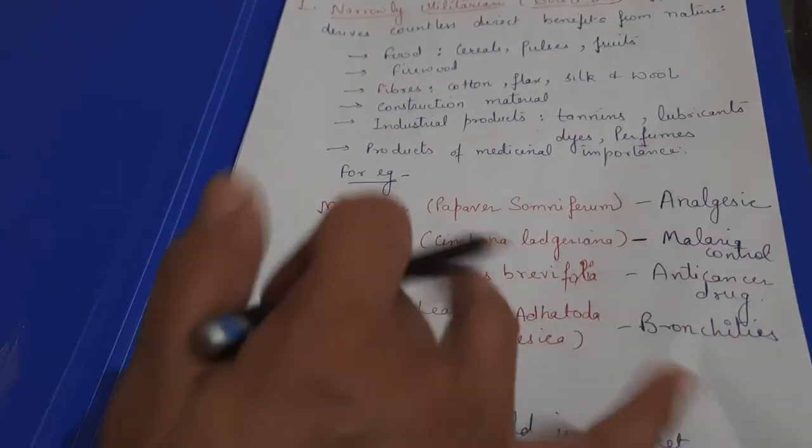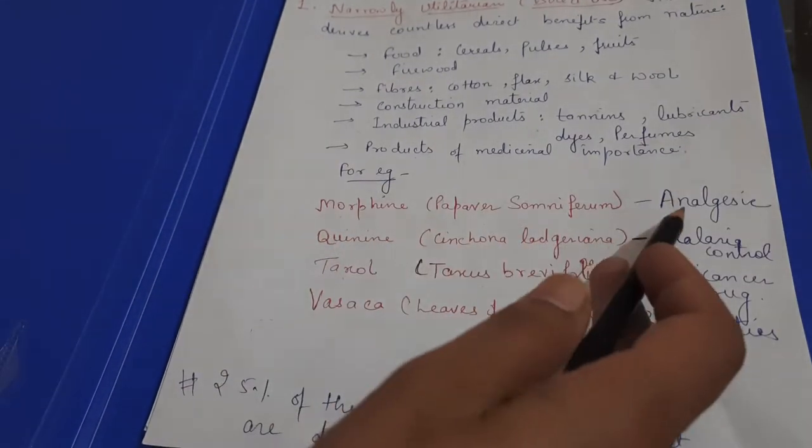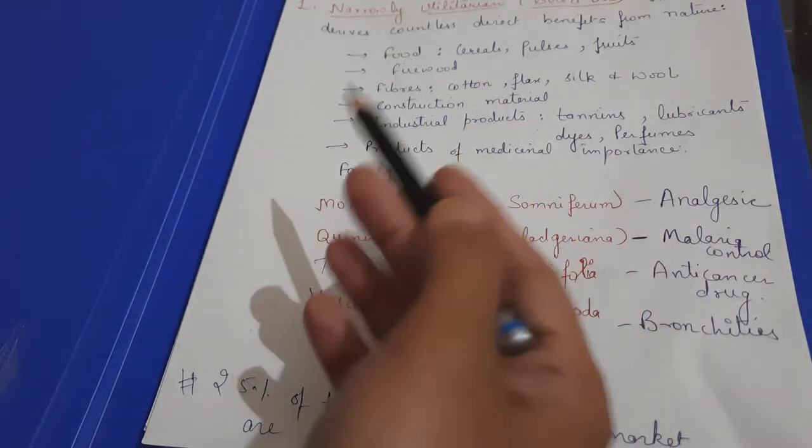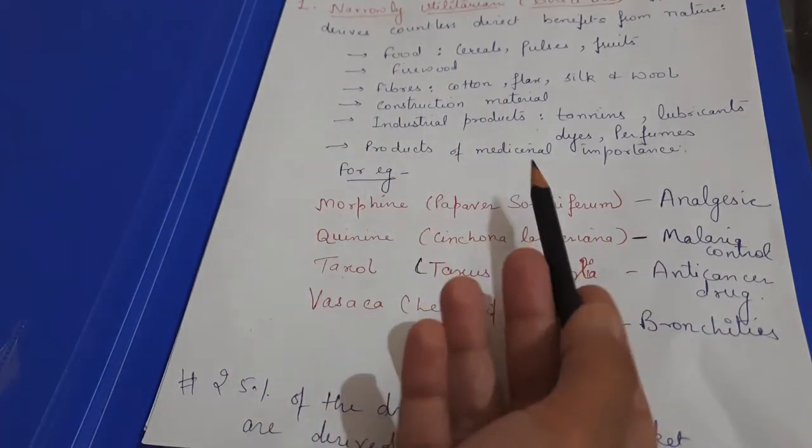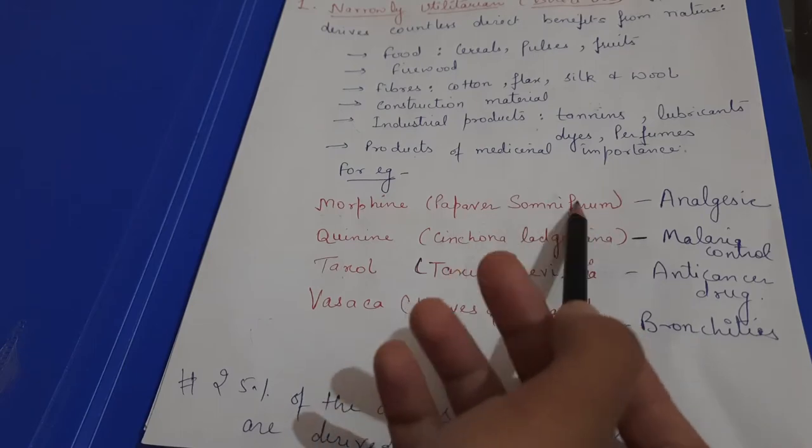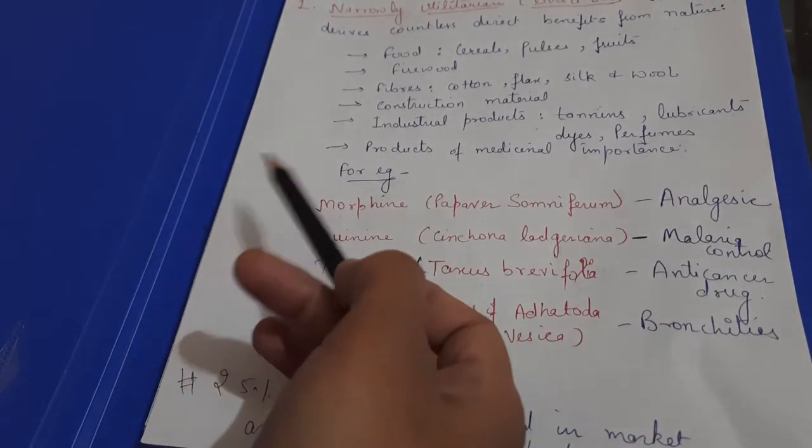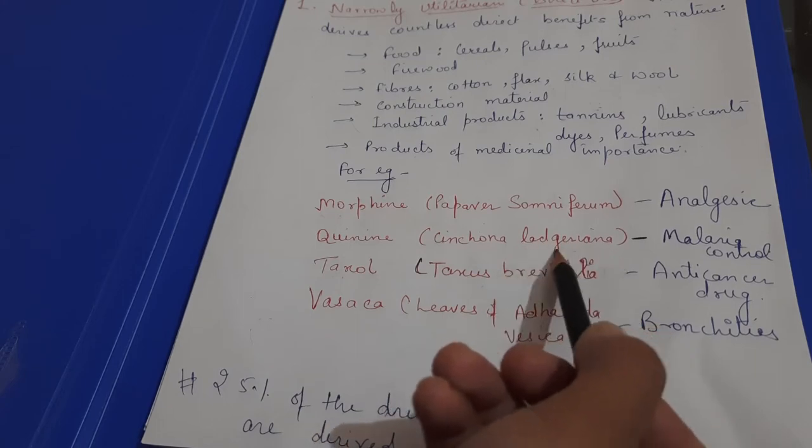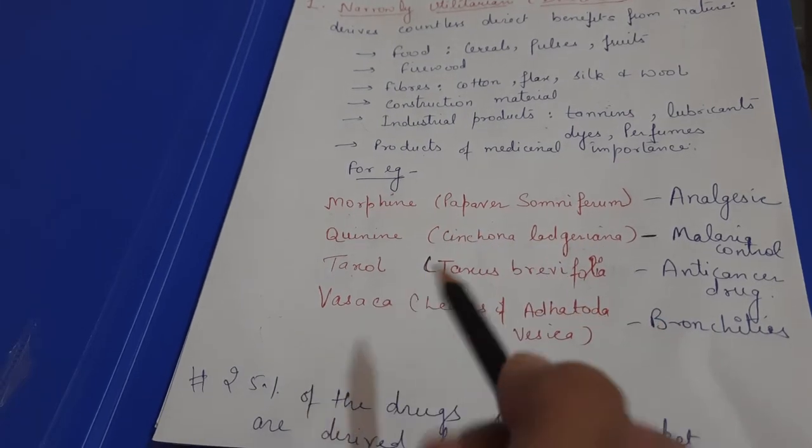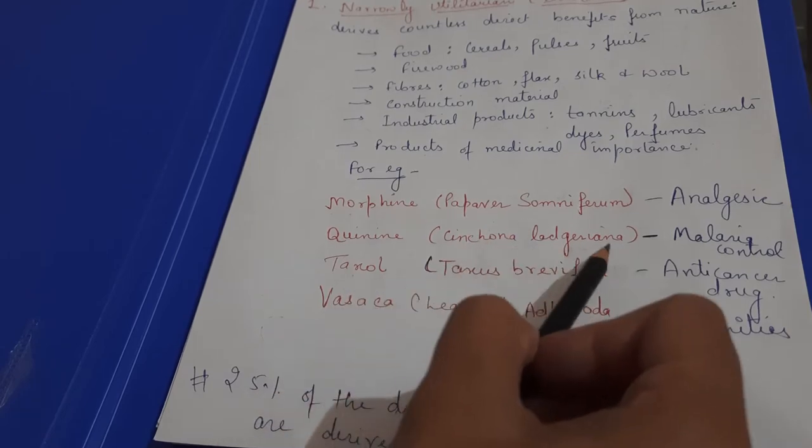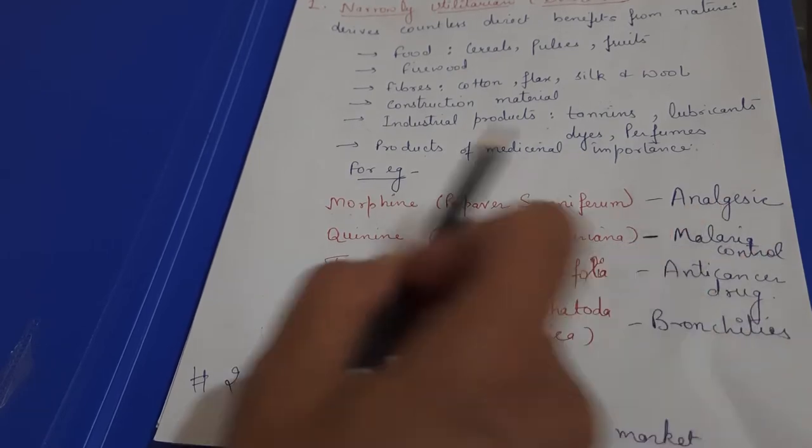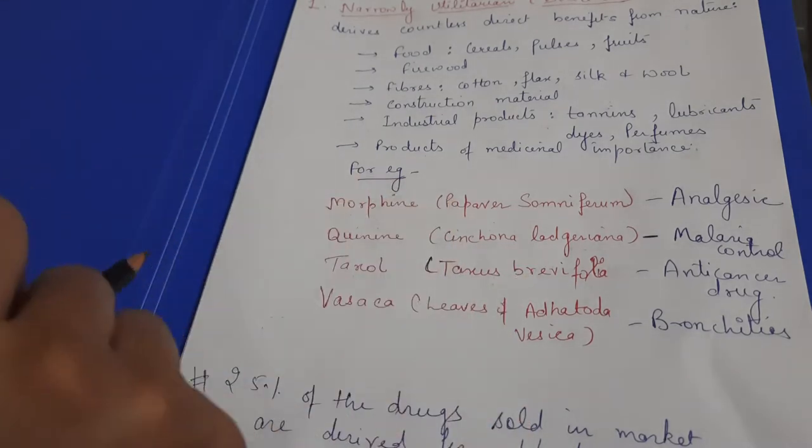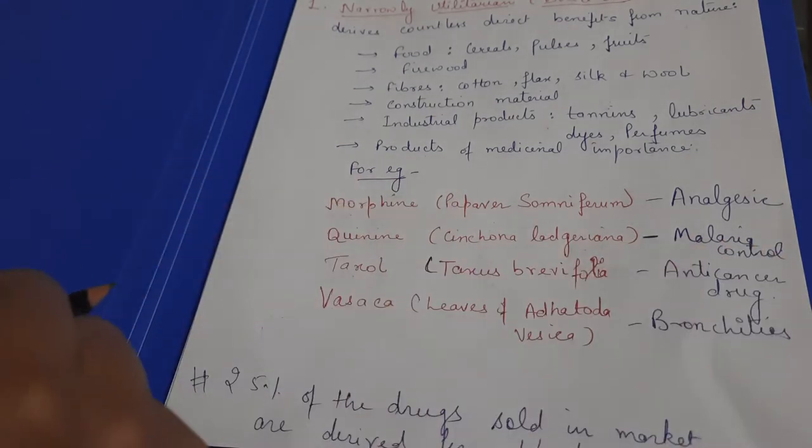Morphine is an analgesic which is used to reduce the pain. Papaver somniferum plant is used for analgesic. Quinine is from Cinchona ledgeriana which is used to control malaria. Taxol from brevifolia is used as anti-cancer drug.